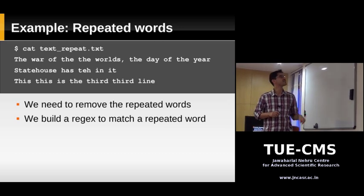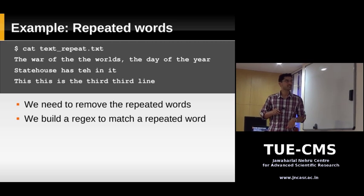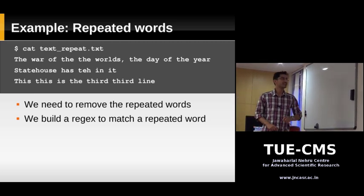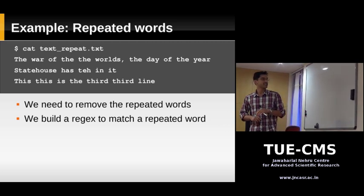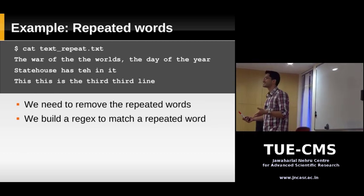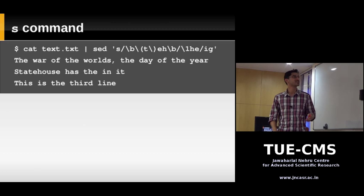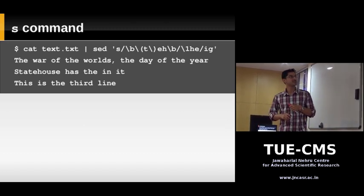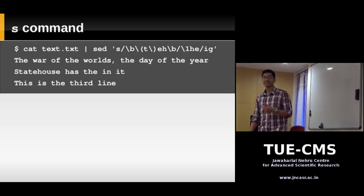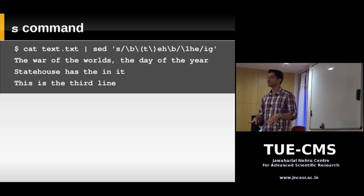Let's move to another example. This input file has some sentences with repeated words — for example 'the the', 'third third', 'this this'. We need to write a sed program that removes these repeated words. We need to build a regular expression that matches a word that is repeated. The simplest approach would be to type the specific word, a space, and the word again — but we want something general that matches any doubled word.